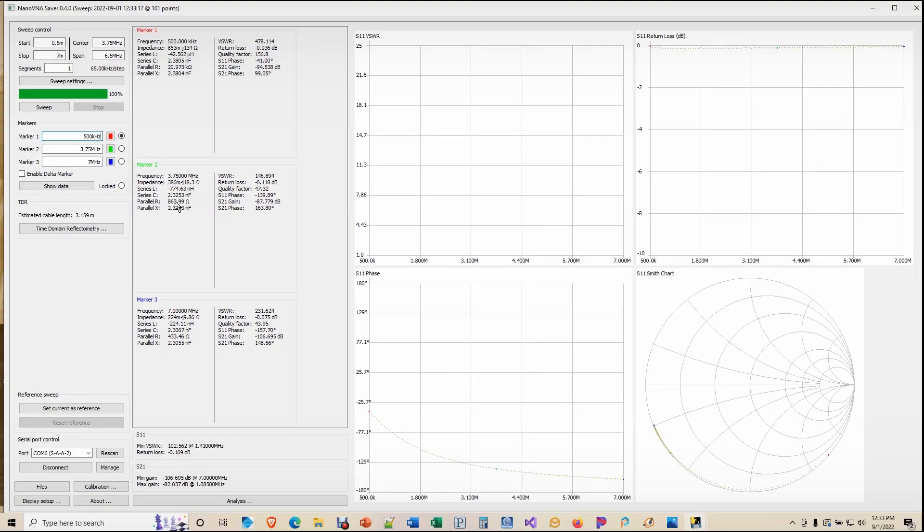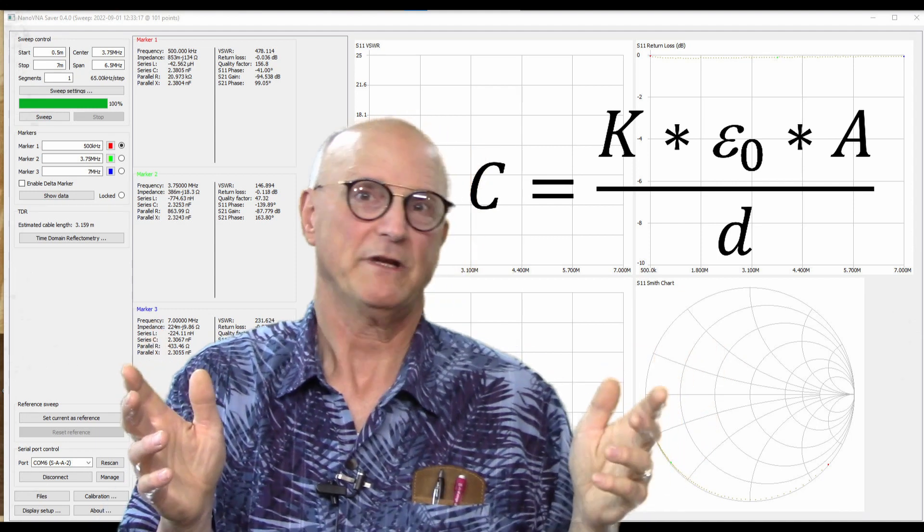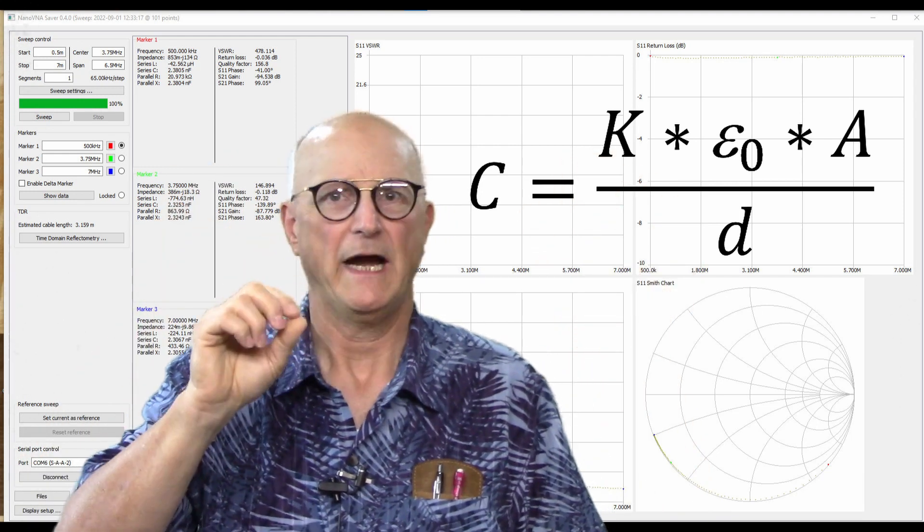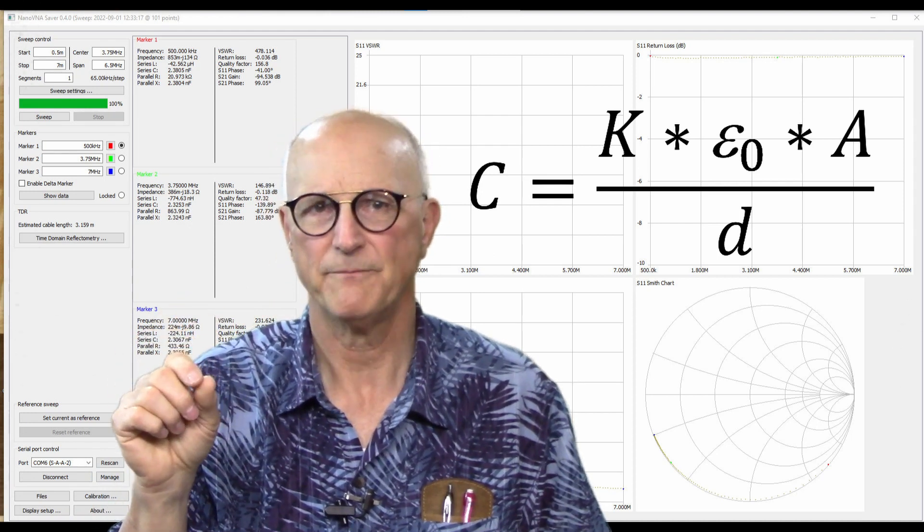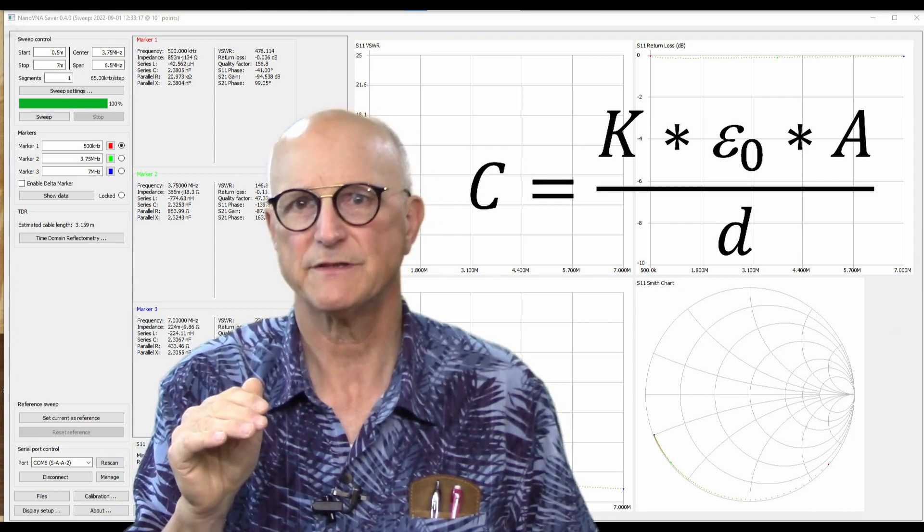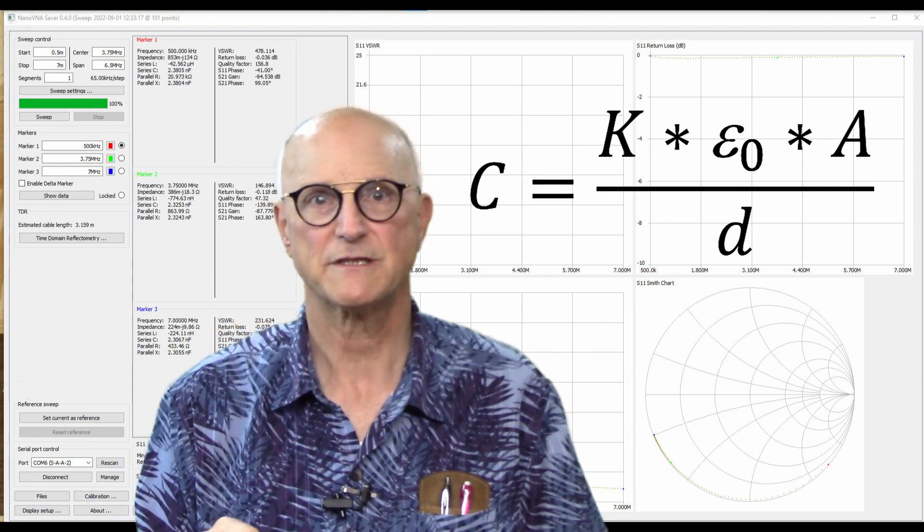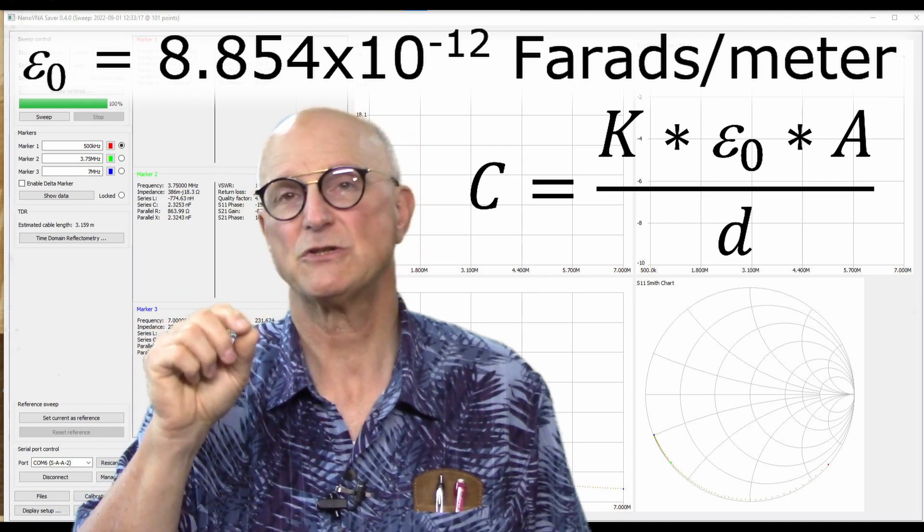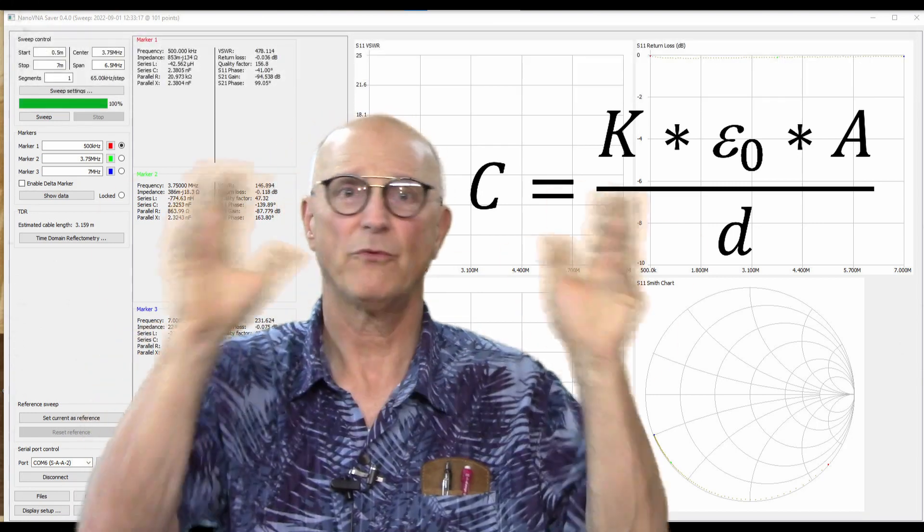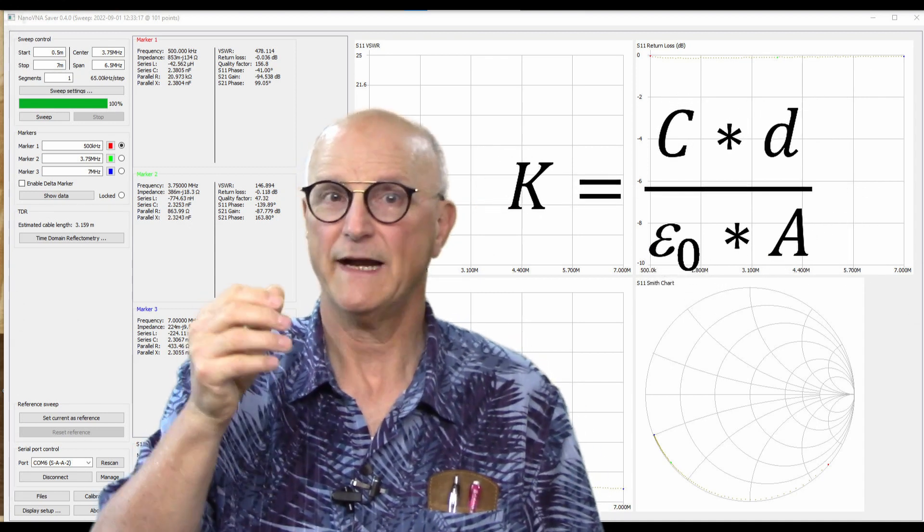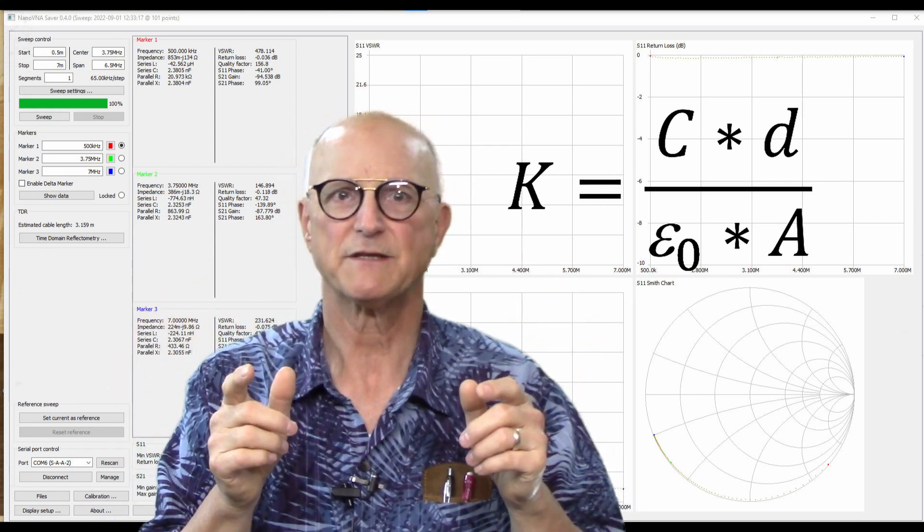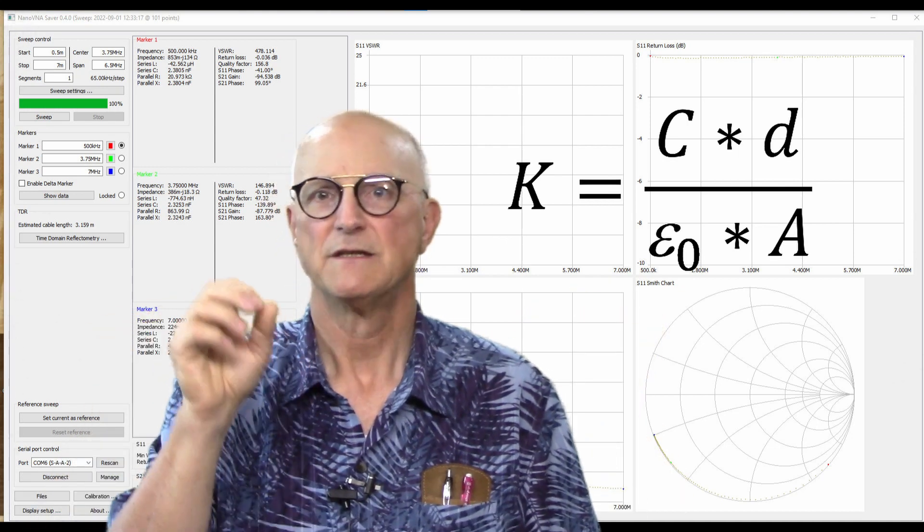Now, with all the physical and electrical measurements made, we can now calculate the dielectric coefficient of the PCB substrate. The standard equation to calculate the capacitance of a capacitor in farads is the quantity of the dielectric constant of the dielectric times the permittivity of free space in farads per meter times the area of the copper in square meters, all divided by the distance between the plates in meters. Now, the permittivity of free space is equal to 8.854 times 10 to the minus 12 farads per meter. Now, when we rearrange this equation and solve it for the dielectric constant, we get the dielectric constant or dielectric coefficient equals the capacitance times the distance between the plates, all divided by the permittivity of free space times the area of the plates.